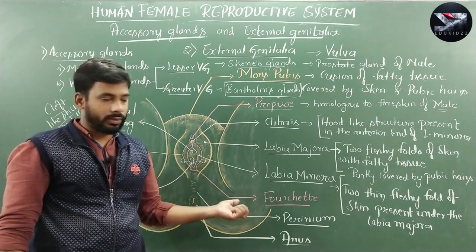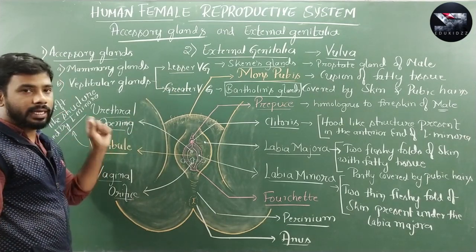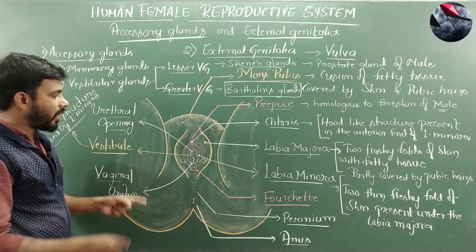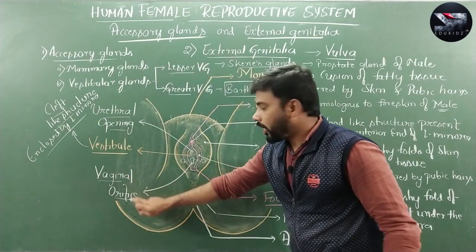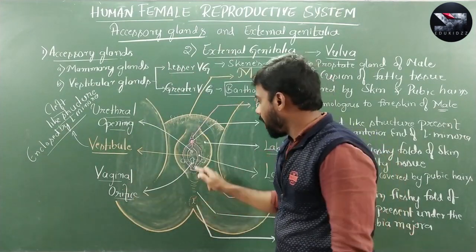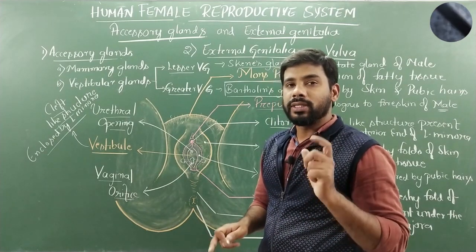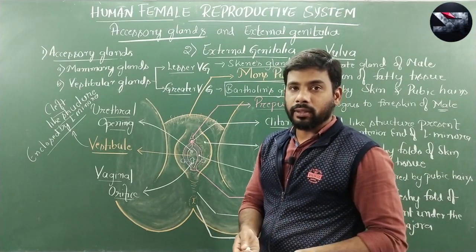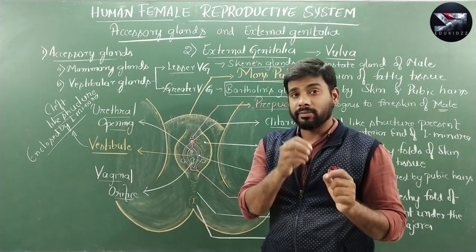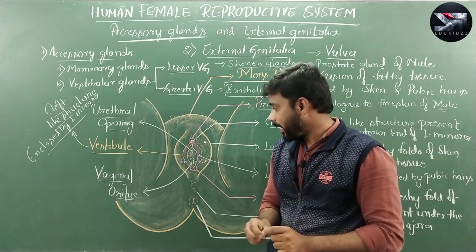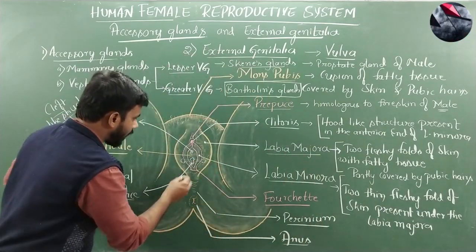Finally, the most important thing to remember: the vaginal orifice is partly surrounded by two folds of a mucous membrane. This double fold of mucous membrane, which is very thin and delicate, is called the hymen.